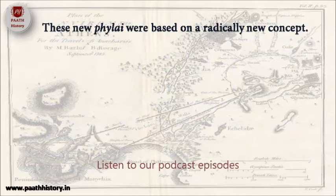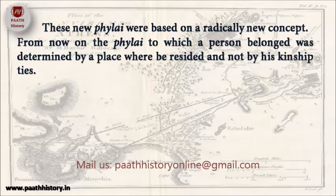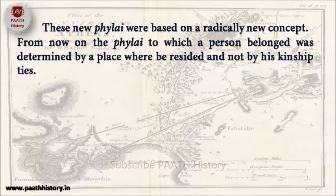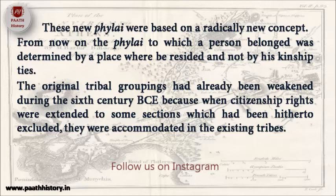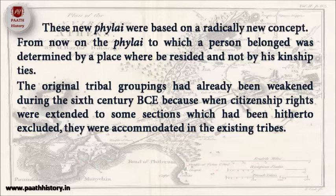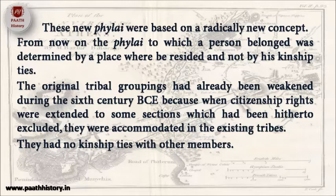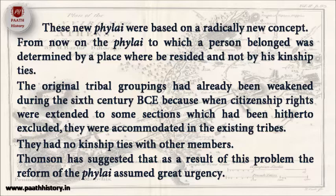These new Philae were based on a radically new concept. From now on, the Philae to which a person belonged was determined by the place where he resided and not by his kinship ties. The original tribal groupings had already been weakened during the 6th century BCE, because when citizenship rights were extended to some sections which had been hitherto excluded, they were accommodated in the existing tribes with no kinship ties with other members. Thompson has suggested that as a result of this problem, the reform of the Philae assumed great urgency.